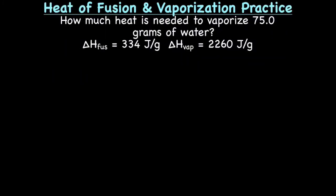Now let's try a couple practice problems. The first one is: how much heat is needed to vaporize 75 grams of water? We need to know if we're going to be using the equation for heat of fusion or heat of vaporization. We're vaporizing, so we must be using the formula Q = m × ΔH_vap.